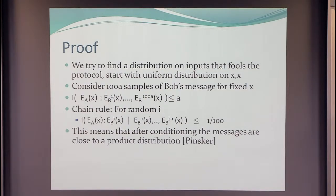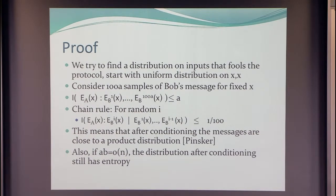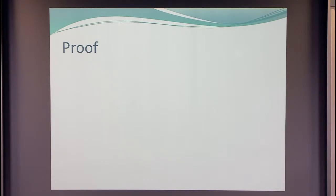According to the Pinsker inequality, small information means the joint distribution is close to a product distribution. Alice's message and Bob's message on the same string are close to a product distribution, and that's not good. Furthermore, if A·B is sufficiently smaller than N, then the distribution we get by conditioning still has entropy in it — actually, it can have Omega(N) entropy. So we achieve a new distribution where the information is small.